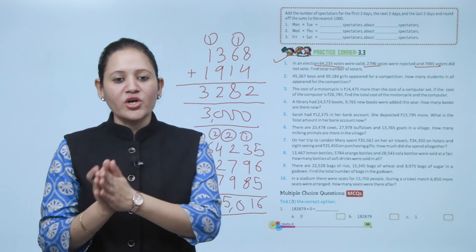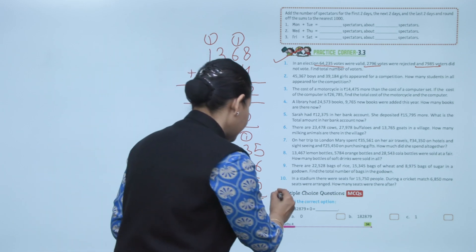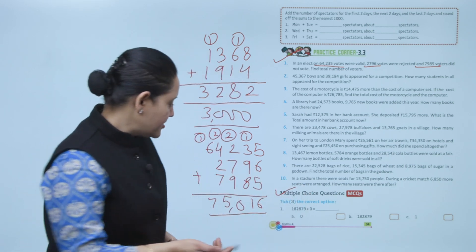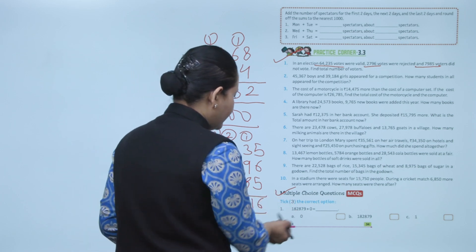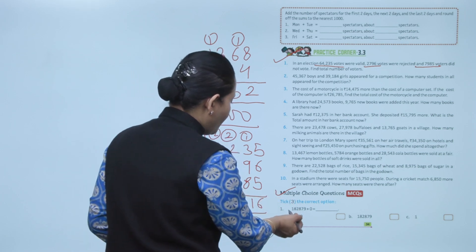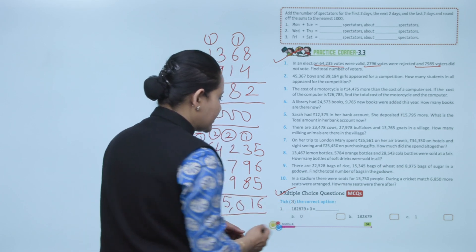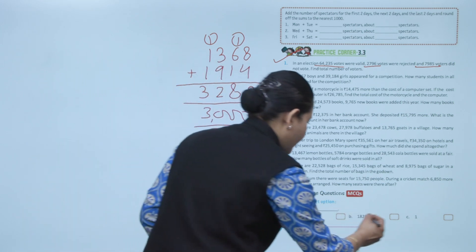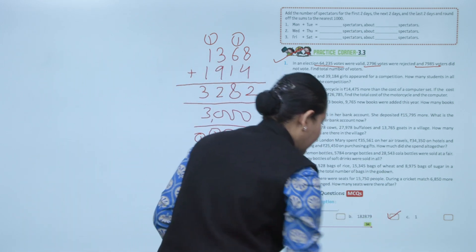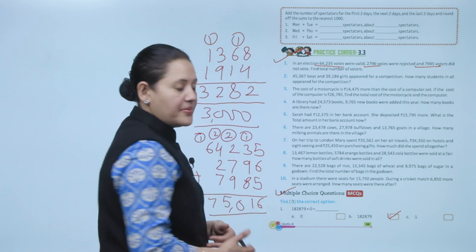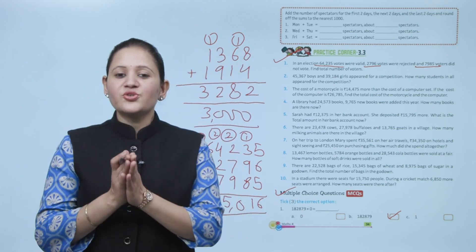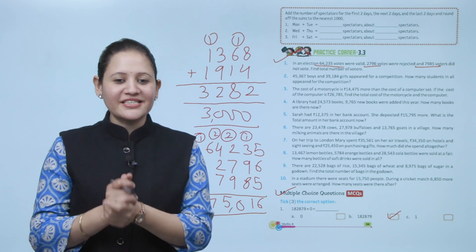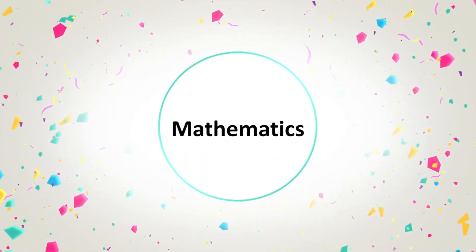Next are multiple choice questions. Take the correct answer. Here, 1,082,879 plus 0 equals 1,082,879, so option B is the correct answer. Here we end the chapter. I hope you understood it well. Now you have to practice.